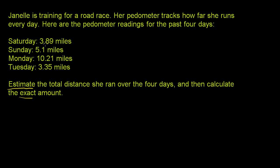I'm doing that because in the tenths place we have an 8, and it is 5 or greater, so let's make that roughly four miles. For 5.1, we round that down because the 1 is less than 5, so that's 5 miles. For 10.21, that's 10 miles because 2 rounds down — it's less than 5. And 3.35 becomes 3 miles because 3 is less than 5, so we round down.